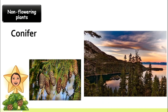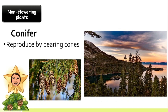Next, let's look at conifers. One good example of a conifer is the Christmas tree. They reproduce by bearing cones. If you look at decorative Christmas trees around the Christmas season, you will see ornaments that actually look like cones — those are the things conifers use to reproduce. Conifers are vascular plants.